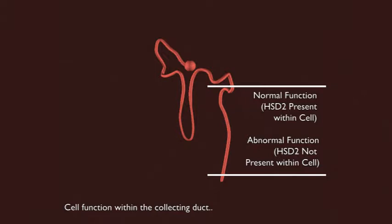We will now observe a normal functioning cell within the collecting duct with the enzyme 11-beta-HSD2 present within the cell. This will be followed by an example of an abnormal functioning cell where 11-beta-HSD2 is not functioning correctly.